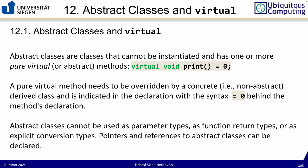In C++ you define an abstract class by having at least one pure virtual method in the class. Pure virtual methods use the virtual keyword, but what makes them pure is the '= 0' at the end, and that we don't implement this method at all. Because of that, you logically cannot create any objects of this class.